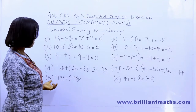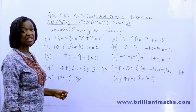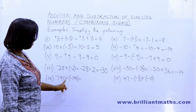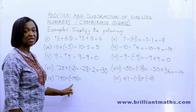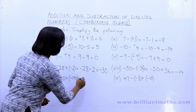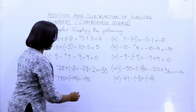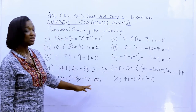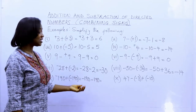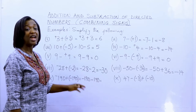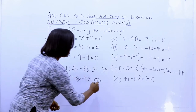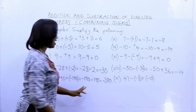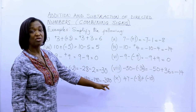Minus one hundred and ninety plus minus one hundred and ninety: plus and minus is a minus, so we have minus one hundred and ninety minus one hundred and ninety. Both are negative, so we add the numbers together and give the answer a negative sign. Double one hundred and ninety is three hundred and eighty, so the answer is minus three hundred and eighty.